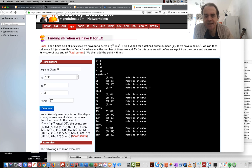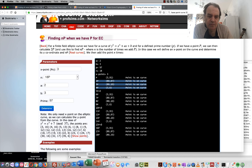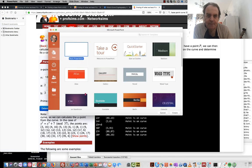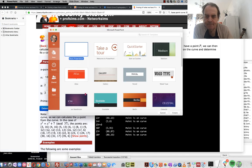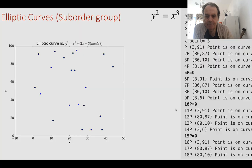So this is not a good point to pick. And this defines a suborder group equal to five.